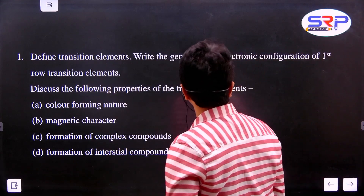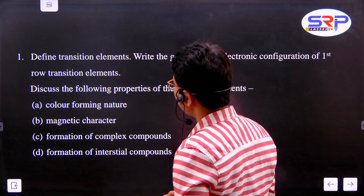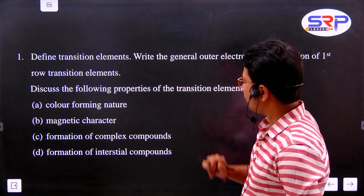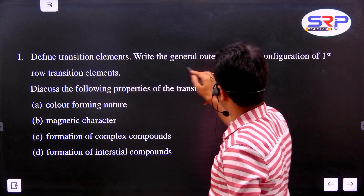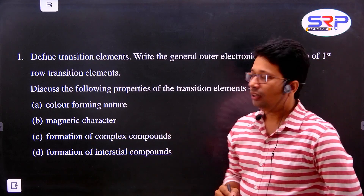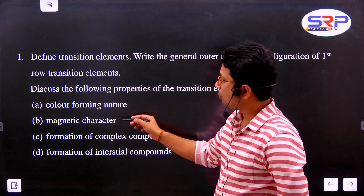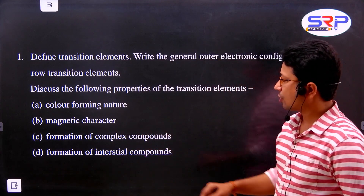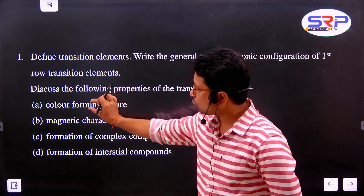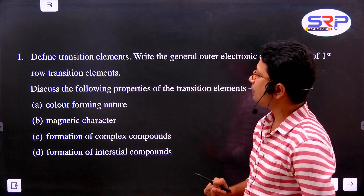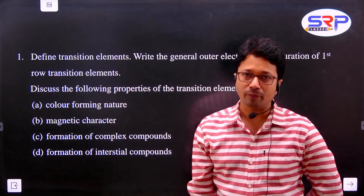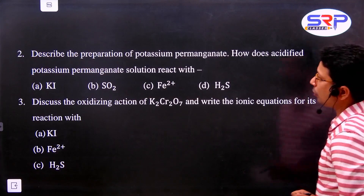First we will discuss 2-mark questions. Actually, some questions are given in 5-mark question format - for example: 'What is a transition element? Give the general outer electronic configuration of the first row transition elements.' Then specific properties are asked: color formation, magnetic character, formation of complex compounds, formation of interstitial compounds. These parts can be asked as 2-mark or 3-mark questions, or combined into a 5-mark question. Prepare both types.